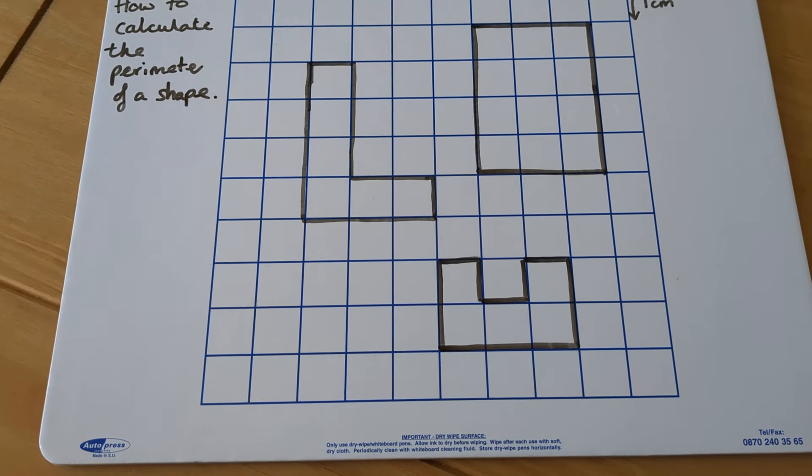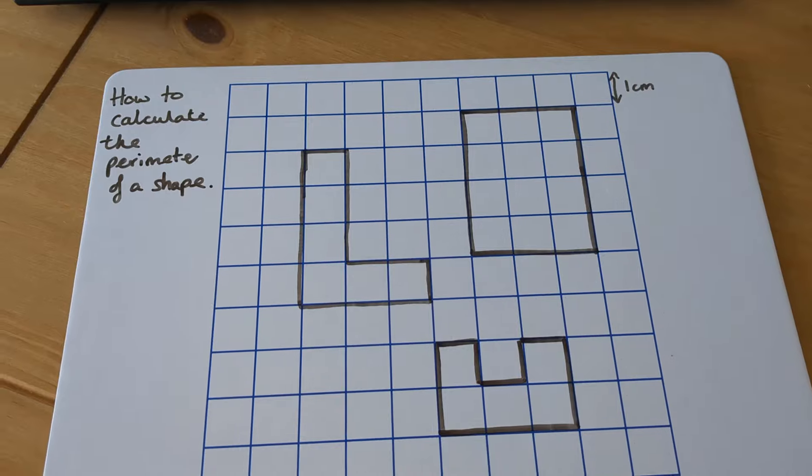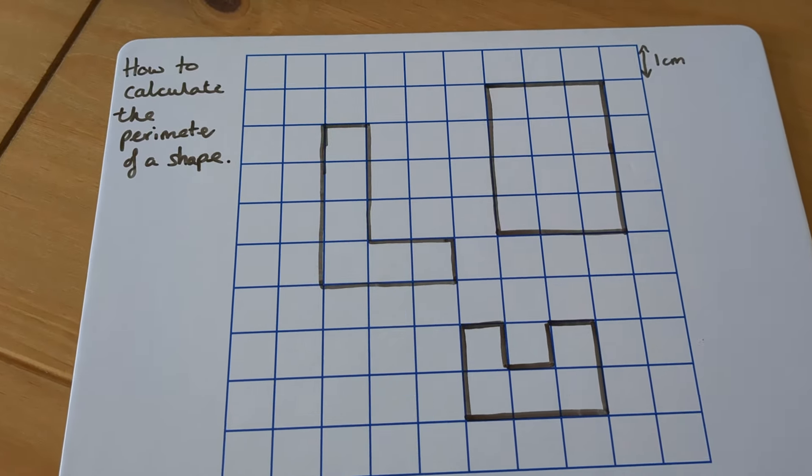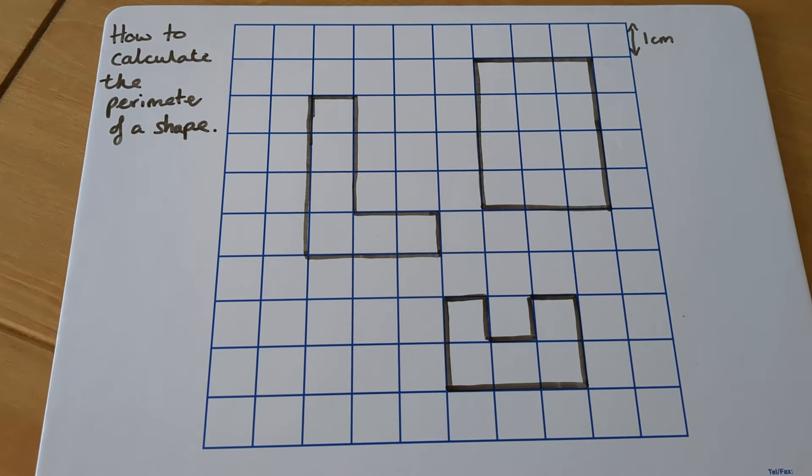The perimeter of a shape, which we haven't really discussed yet, is the outside. So I would say think about Jurassic Park and the fence that goes all the way around the outside to keep the dinosaurs in. That's the perimeter, it's the outside part.